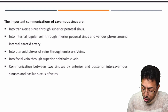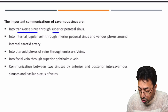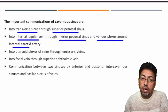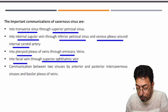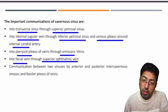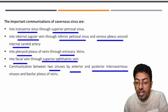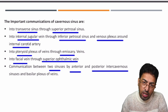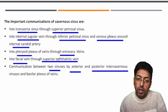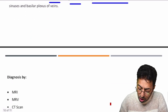The cavernous sinus has extensive communications: it drains into the transverse sinus via the superior petrosal sinus, and into the internal jugular vein via the inferior petrosal sinus. It also communicates with the pterygoid plexus via emissary veins, and with the facial vein via the superior ophthalmic vein — which explains the route of infection from the dangerous area of the face. The two cavernous sinuses are connected via anterior and posterior intercavernous sinuses, so infection can spread from one side to the other.